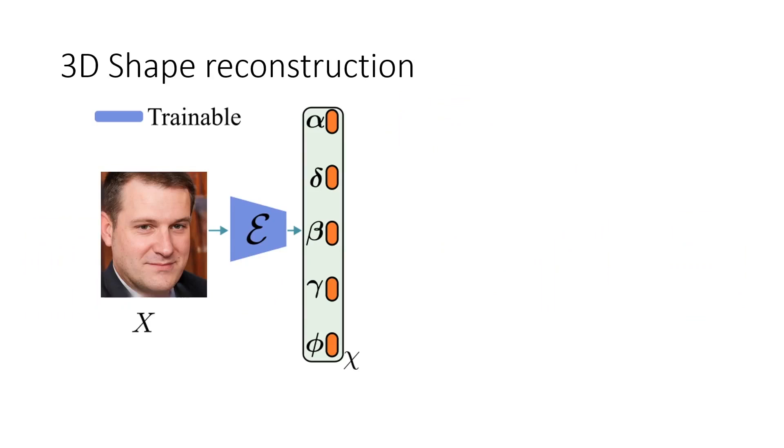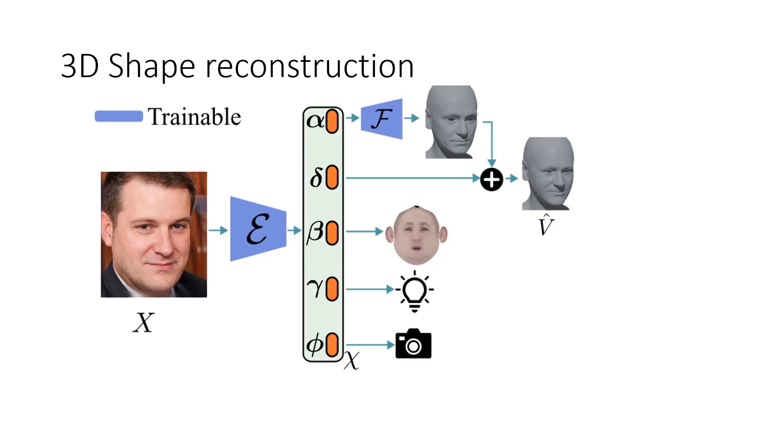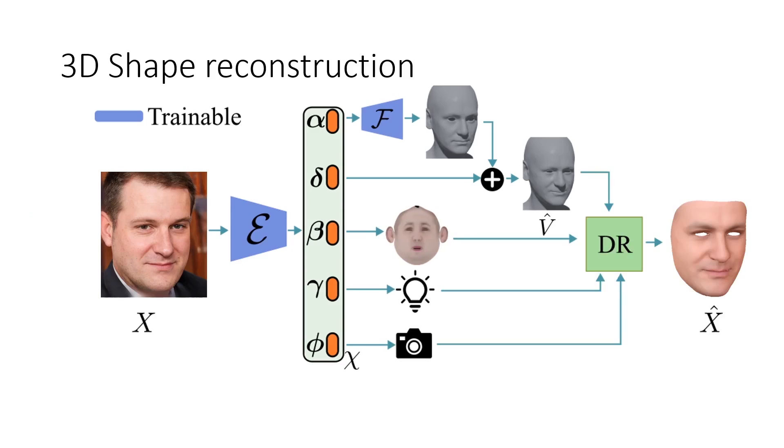For 3D shape reconstruction, we consider a parametric scene representation, where an encoder E estimates face geometry coefficients for both identity and expression, albedo, light, and camera parameters. These parameters are used in a differentiable renderer that enables self-supervised training by comparing the rendered scene and the input.